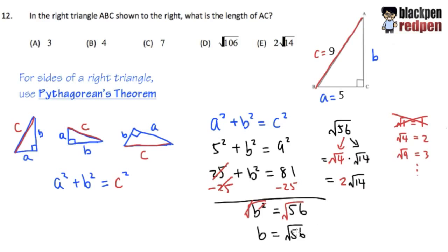This will be it. Finally, we see that B is equal to square root of 56, which will give us 2 square root of 14. This right here will be the final answer, and that's answer choice E.